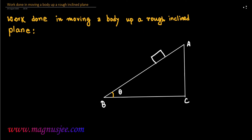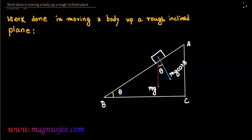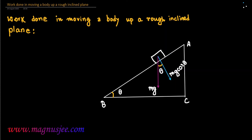A body of mass M is placed on the inclined plane and its weight Mg acts vertically downwards. Mg acts perpendicular to the horizontal plane BC and is resolved into two rectangular components: Mg cos theta, perpendicular to the inclined plane AB, and Mg sin theta, parallel to the inclined plane AB.